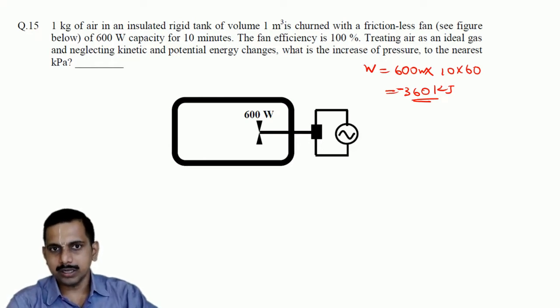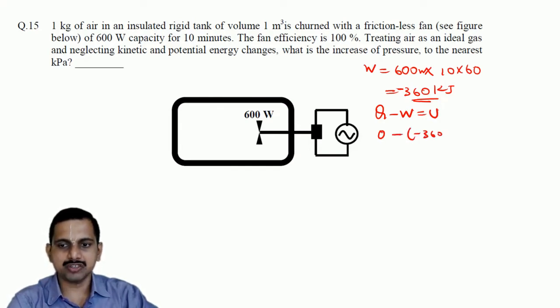Now let us apply the first law of thermodynamics: Q minus W equals change in internal energy. Q is 0 because there is no heat transfer across the boundary. So 0 minus (-360) equals delta U. Therefore, delta U equals 360 kJ.